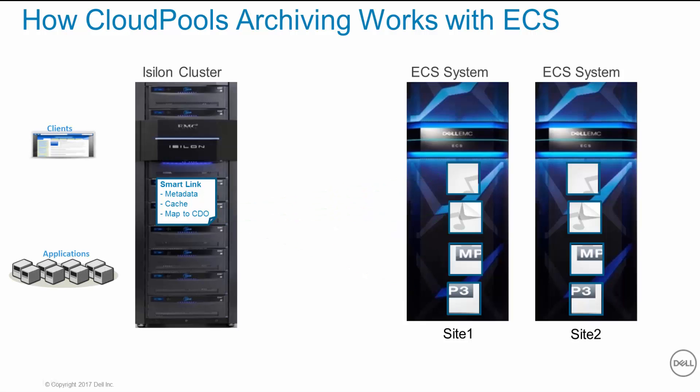Data archived to the ECS system by Cloud Pools is accessible only through the Isilon cluster using SMB, NFS, HDFS, and SWIFT protocols.